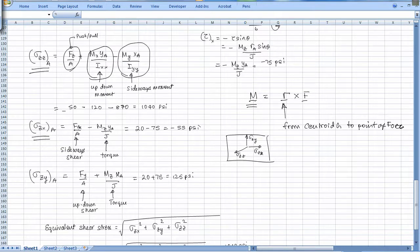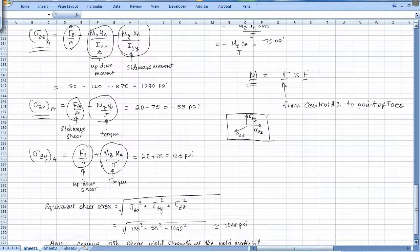Sigma_zx is sideways shear plus component of shear stress due to torque. Sigma_zy is up-down shear plus component of shear due to torque. If you combine all of this, then you have to find the equivalent shear stress.